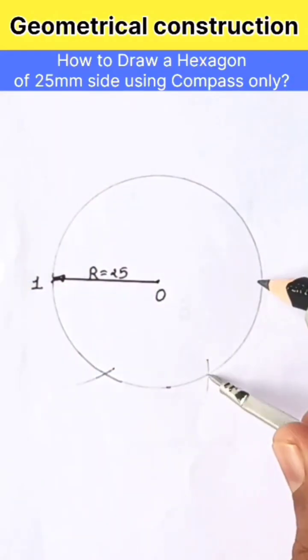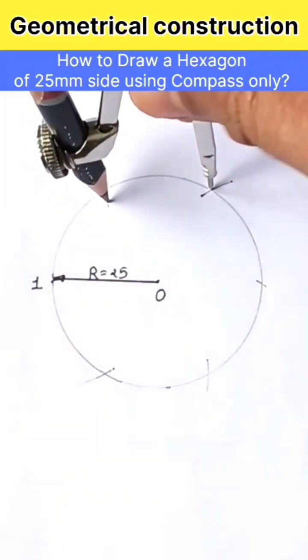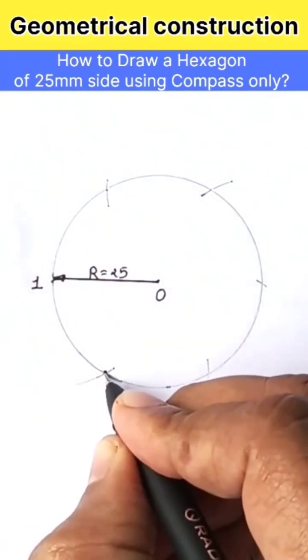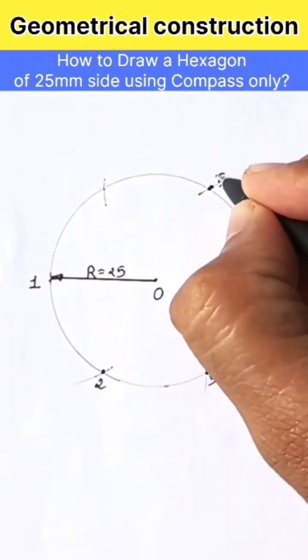Now continue stepping around the circle with the same radius. Draw an arc cutting the circle to get the points 3, 4, 5, 6 on the circumference.